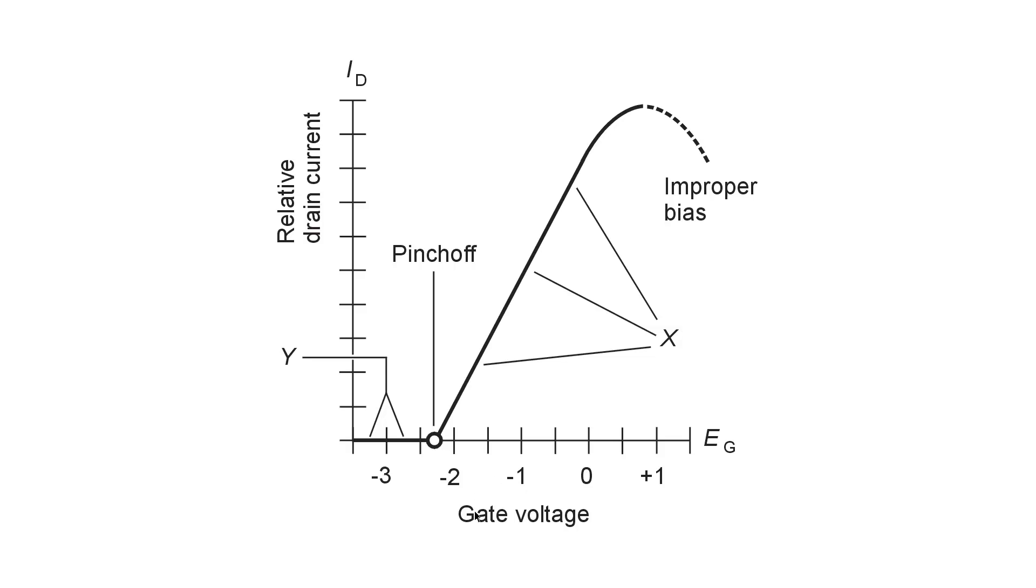Now, if you vary the gate voltage on a device like this with a constant drain voltage, you will get a drain current that follows a function that looks like this. If the gate voltage is negative enough, you won't get any drain current at all.